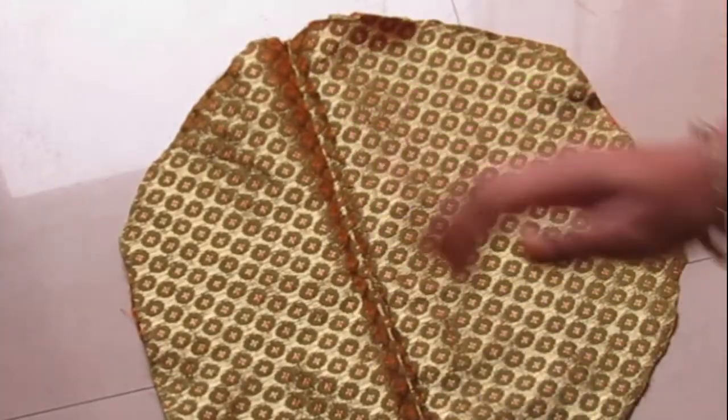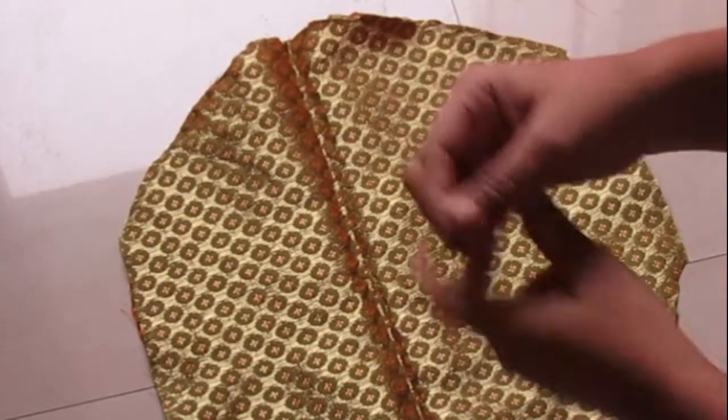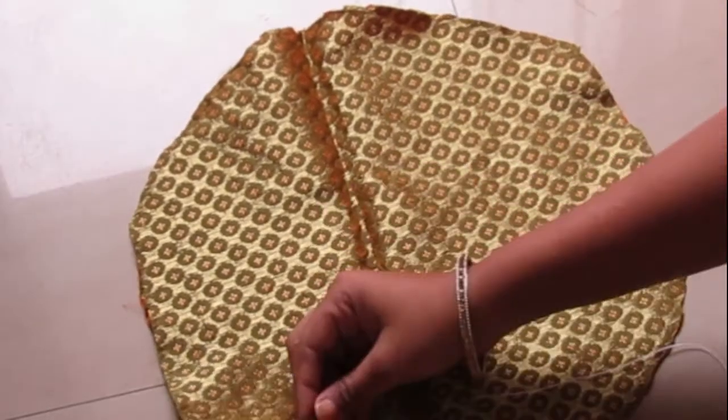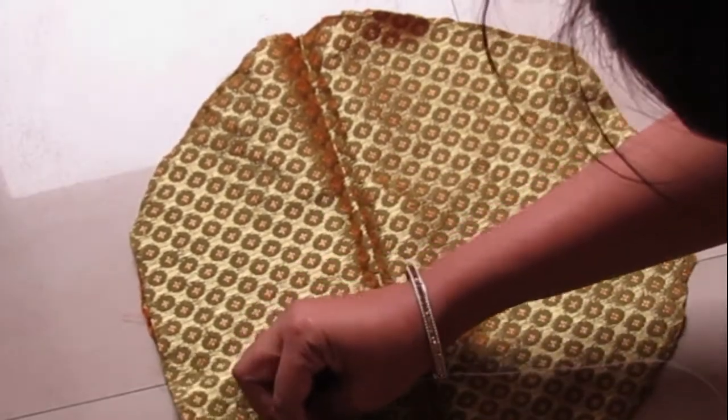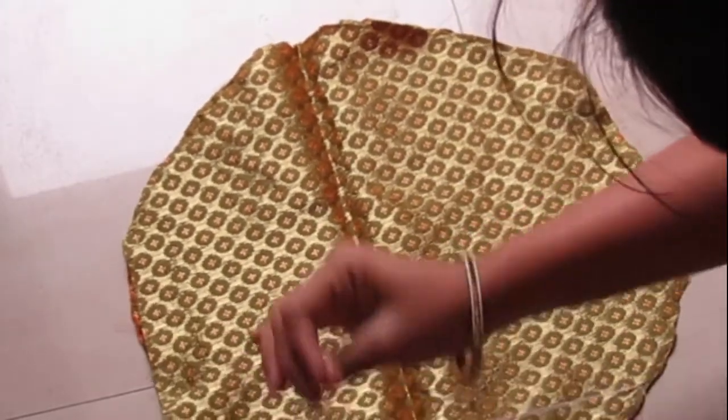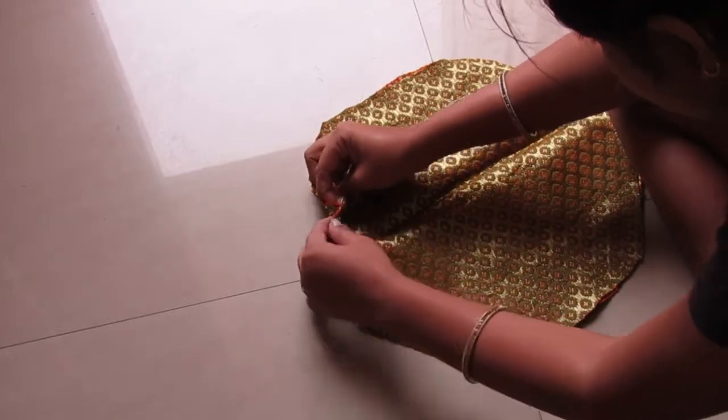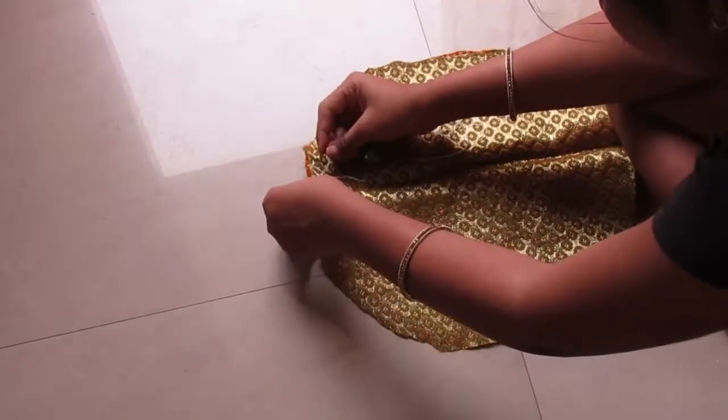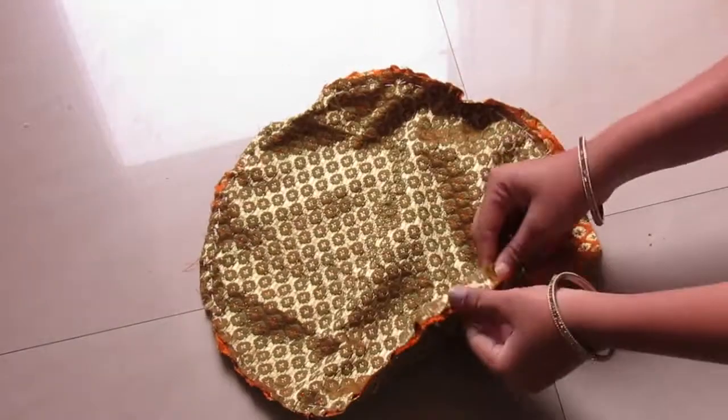Now reverse both the circles and sew it with thread and needle. You may also use hot glue if you want. Leave a little space.